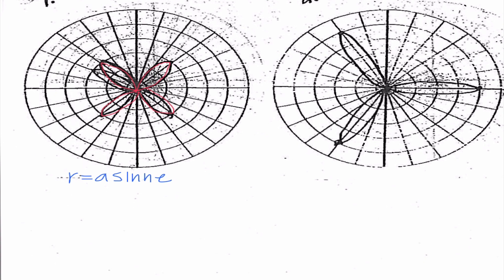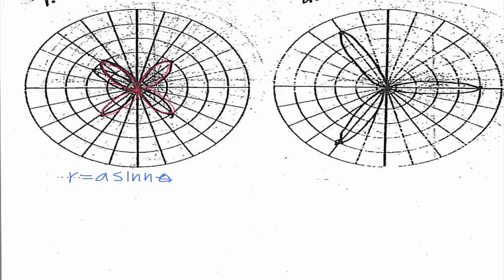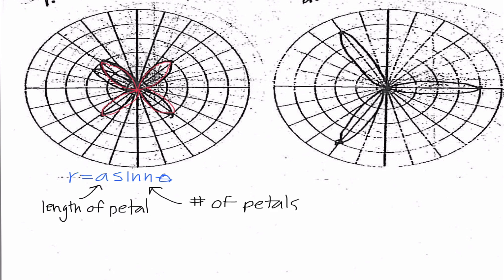From here, there are two things we need to figure out. We need to figure out a, which is the length of the petal — how far out are we going. The other thing we need to determine is n, which deals with the number of petals. If we have an odd number of petals, that's our n value. If we have an even number of petals, we divide by two, and that's our n value. The reason being: when graphing, if n was odd, that was how many petals we had; if n was even, we doubled it. So this is getting us back there.